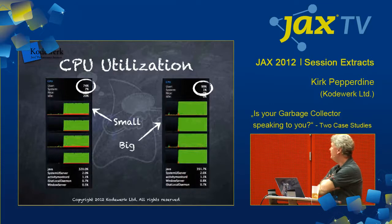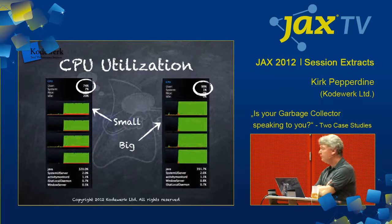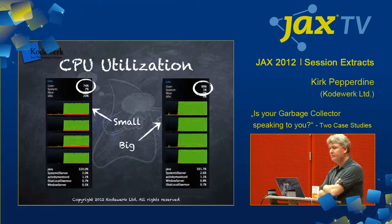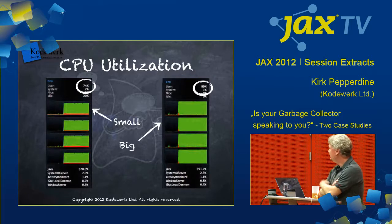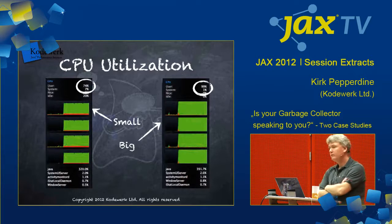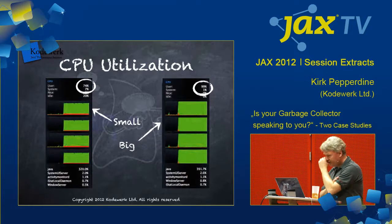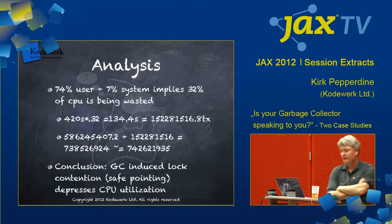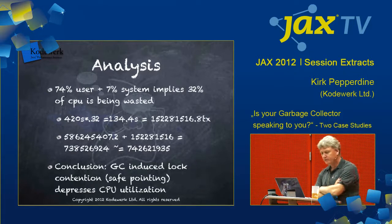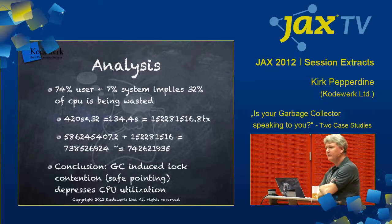We can actually see that right here in this CPU utilization. If we look at the small heap, we can see that we have 74 percent CPU utilization in user space — that's basically Java running — and 7 percent system. Whereas if we go to the big heap, we can see we have 99 percent CPU utilization where we only have 1 percent system. That means we can do more analysis here: 74 percent user plus 7 percent system implies that we're wasting 32 percent of the cycles on our machine — we're just not utilizing them.